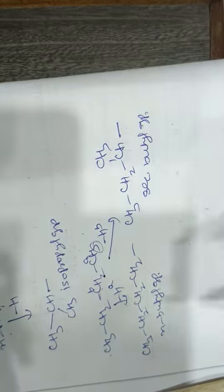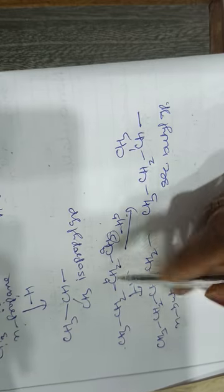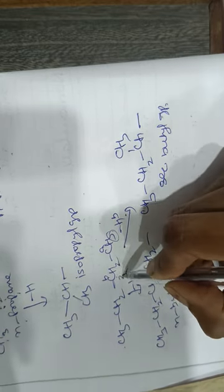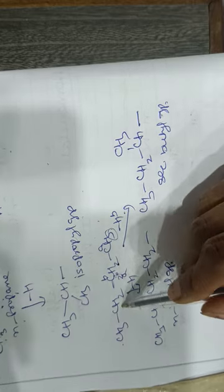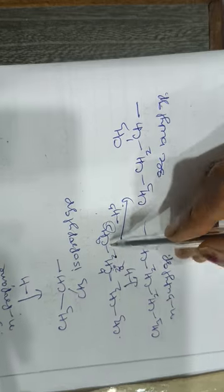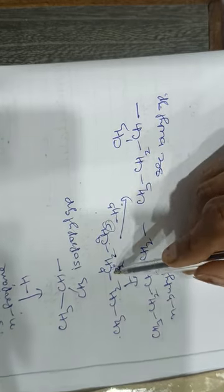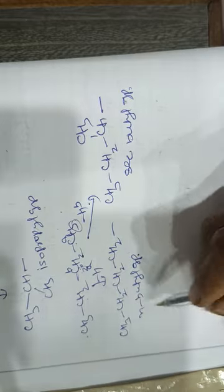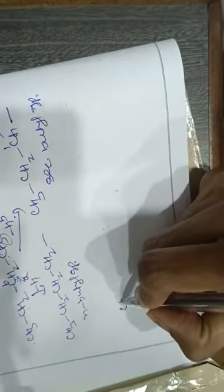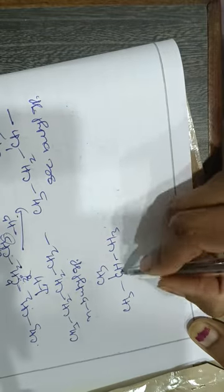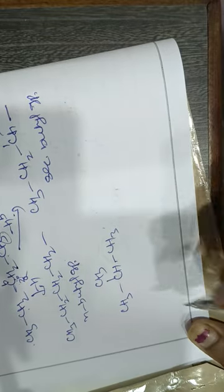Why is it called the secondary butyl group? Because the hydrogen was removed from a secondary carbon. A secondary carbon is attached to two other carbons, whereas a primary carbon is attached to only one other carbon. So from normal butane we can derive the normal butyl group and the secondary butyl group.